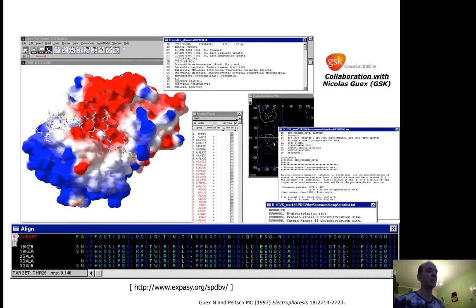Here you get the Ramachandran plot, which tells you how well your model agrees with expected backbone conformations.